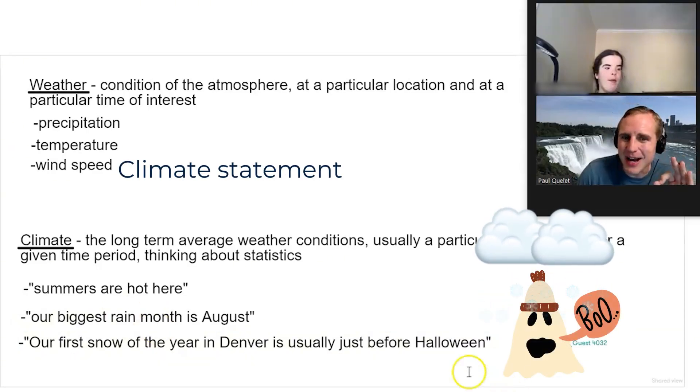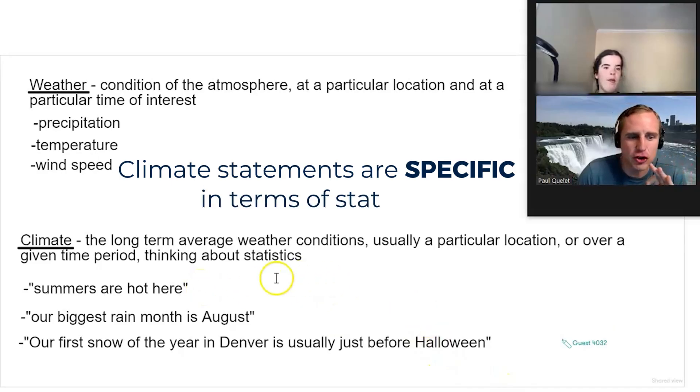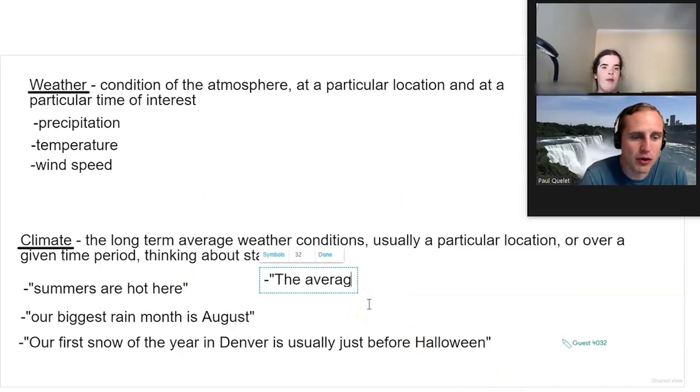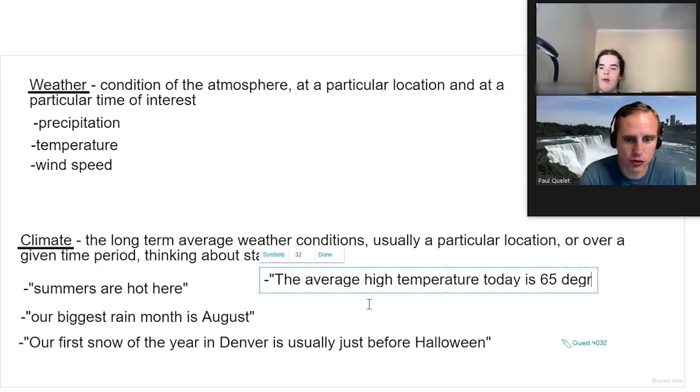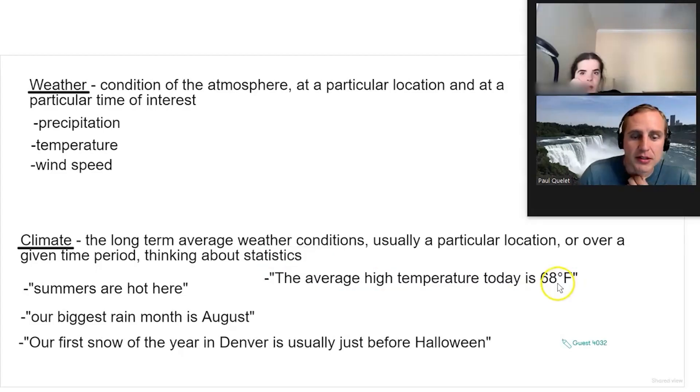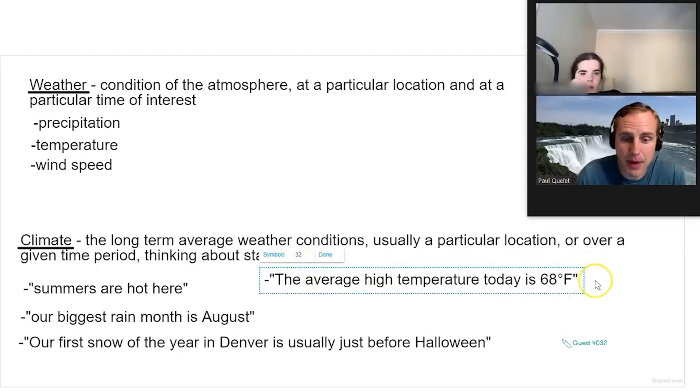And by the way, climate statements a lot of times are also very specific in terms of statistics, right? You could say the average high temperature today is 65 degrees Fahrenheit. 68 degrees Fahrenheit is about 20 degrees Celsius.